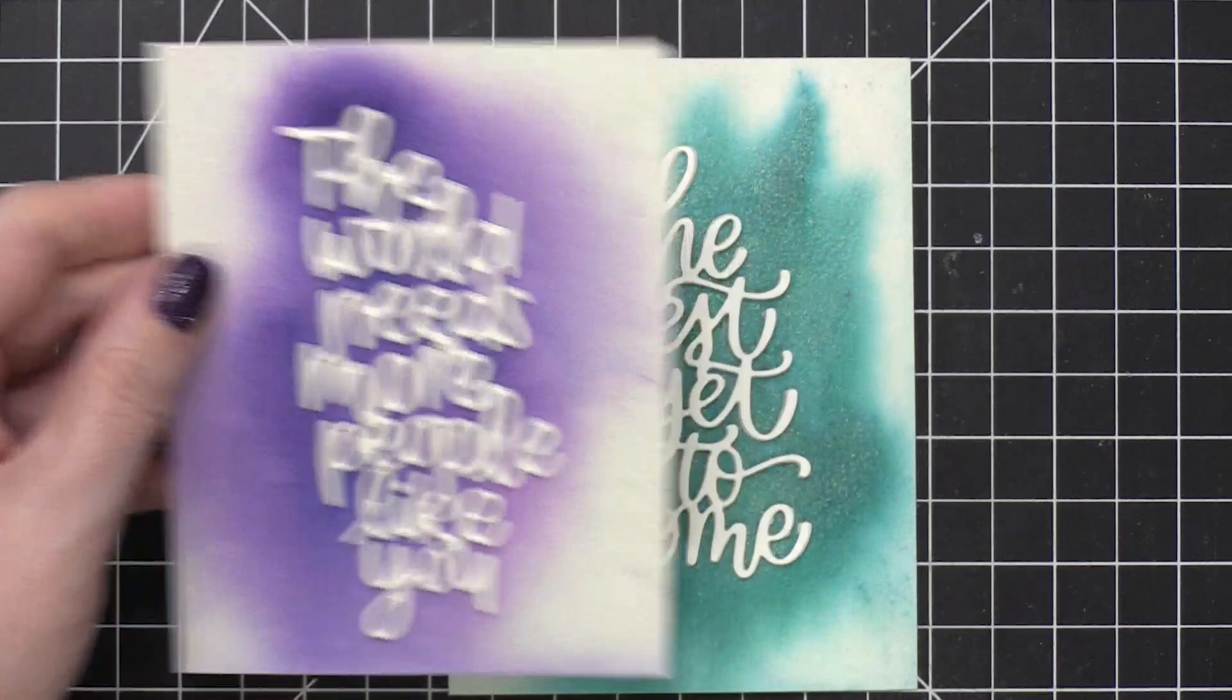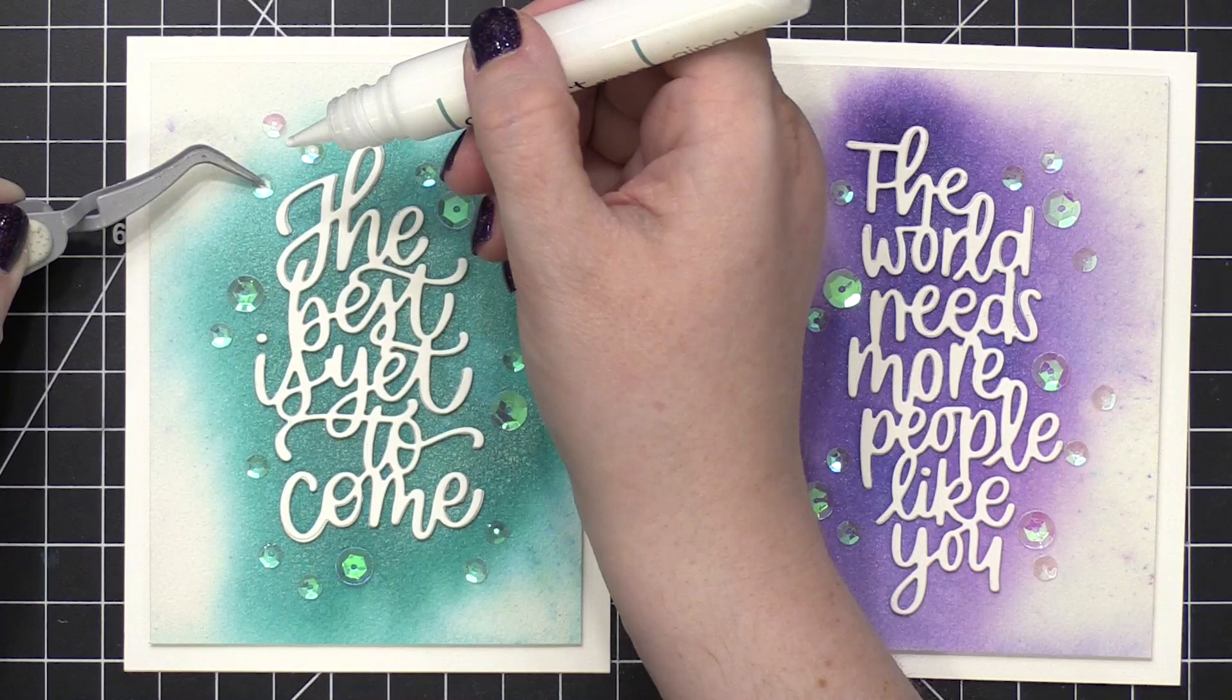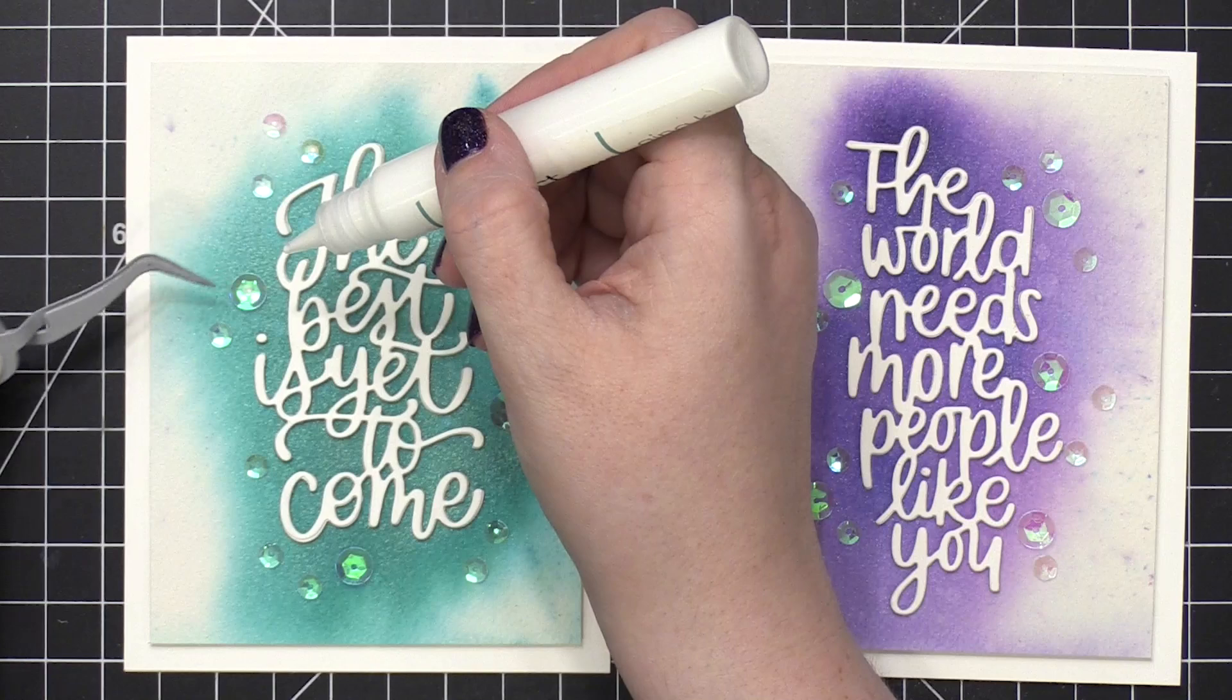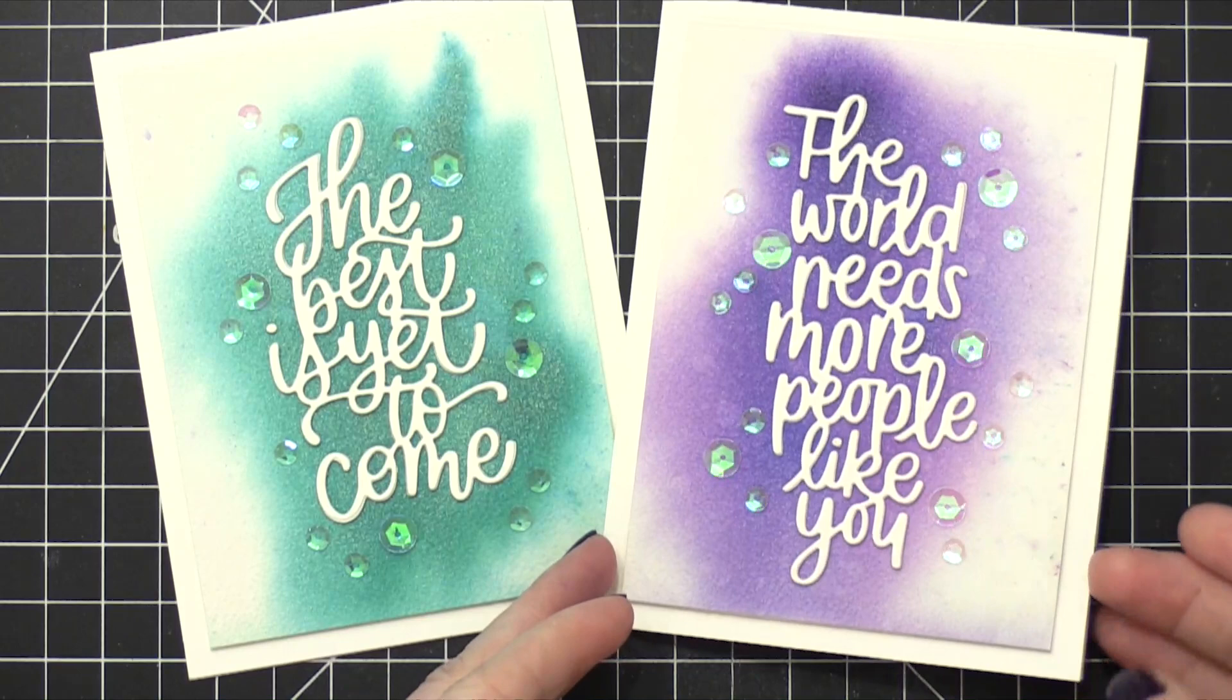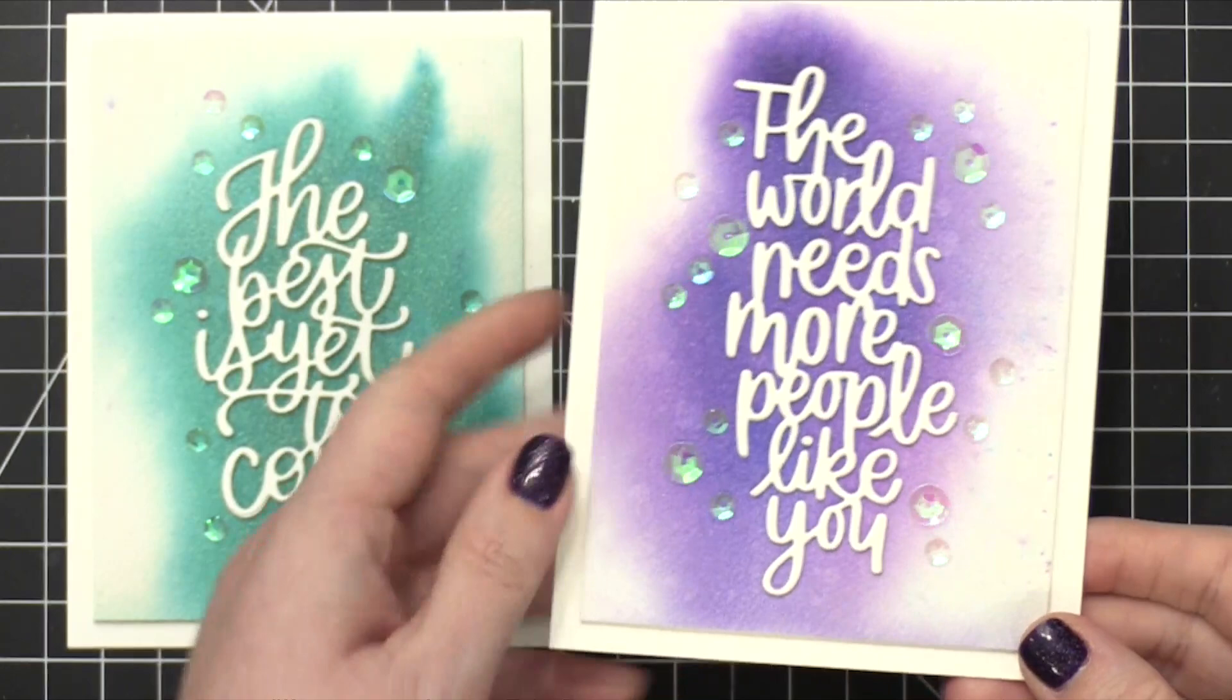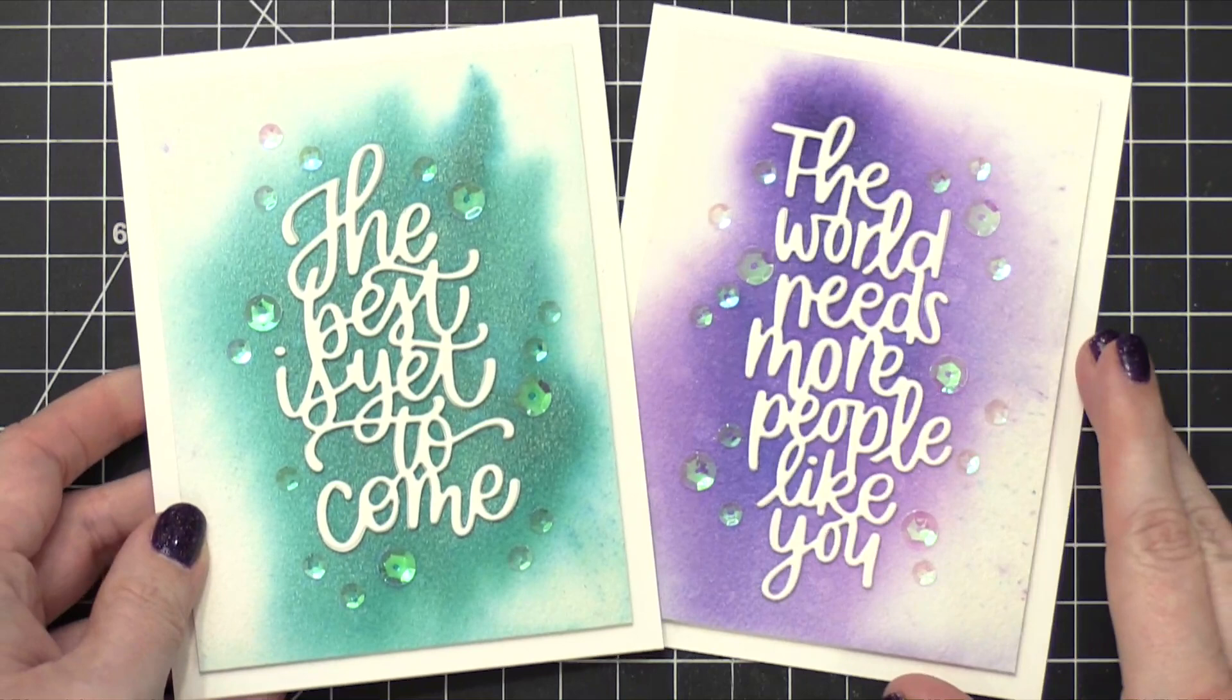So I've adhered the watercolor backgrounds to card fronts that are cut to four and a quarter by five and a half. And then I took some crystal sequins from Darice. This is the eight millimeter and five millimeter size. I used the same exact sequins for both of these cards, but you can see how the color looks a little bit different depending on what's behind the sequins. So I adhered that with some more Gina K Designs Connect glue. And you can see once that glue dries, it's completely clear. You can't see the glue behind the sequins. And adding the sequins just adds a little bit of some intense sparkle along with that more subtle shimmer from the Nouveau Shimmer Powders.